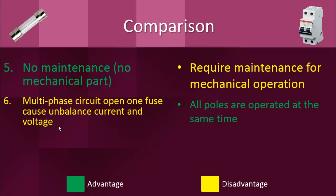One major disadvantage of the fuse applies to three-phase circuits, specifically when used to protect three-phase motors. In case of a fault, if one fuse blows, it causes an unbalance in current and voltages, resulting in single phasing of the motor, causing huge currents to flow and thereby damaging the equipment. Whereas with circuit breakers, in case of a short circuit, all poles are operated at the same time.